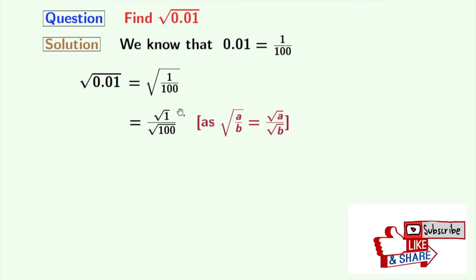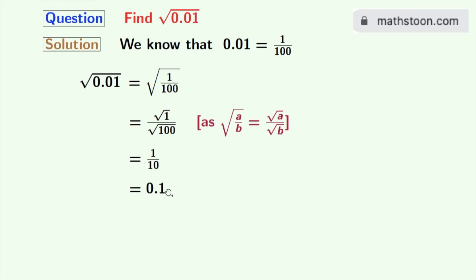We all know that square root of 1 is 1 and square root of 100 is 10. So from this, we get 1 by 10. If we rewrite this fraction as a decimal number, 1 by 10 equals 0.1. So finally, the square root of 0.01 is equal to 0.1, and this is our final answer.